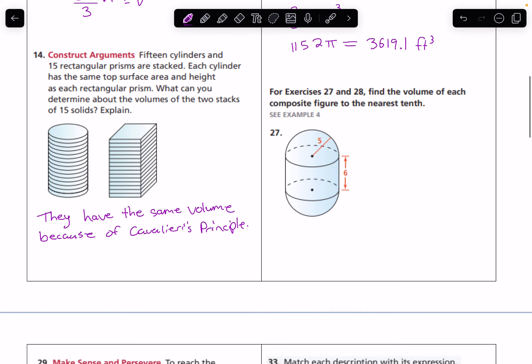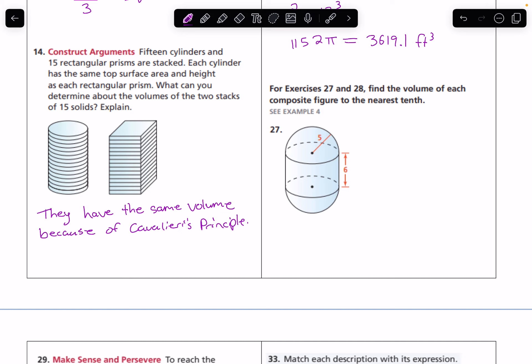27, we want to find the volume of this figure. This figure has two hemispheres and a cylinder. Since it has two hemispheres, we could put those together and make one sphere with volume (4/3)π times the radius of 5 cubed, and one cylinder with a base area of πr². So π times 5² times the height of the cylinder, which is 6. And if we put all of that together and we put it in a calculator, we find that that is around 994 units³.